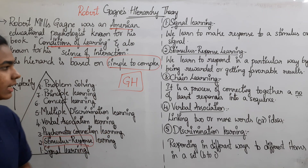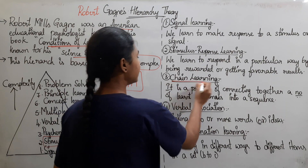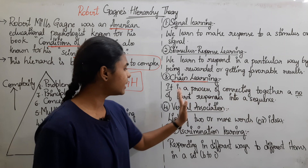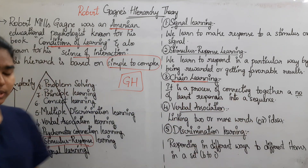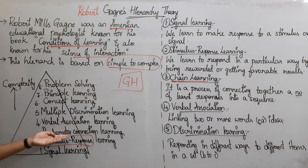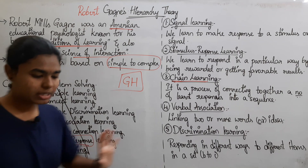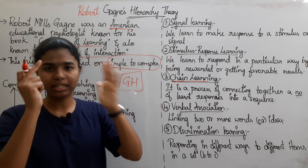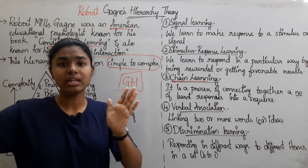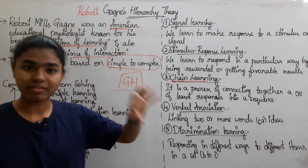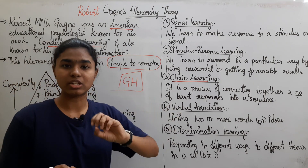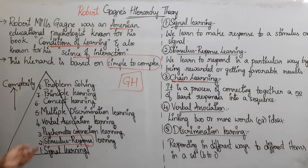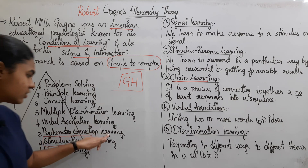Next is Psychomotor Connection Learning, also called Chain Learning. It is the process of connecting together a number of learned responses in a sequence — arranging behaviors in order and connecting them with other experiences and responses. That is our third stage.